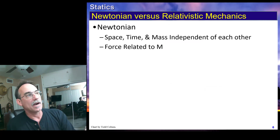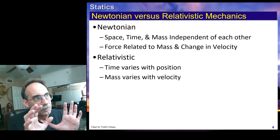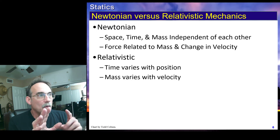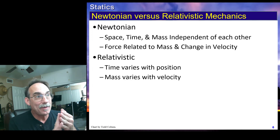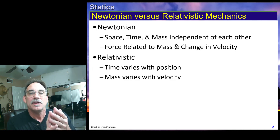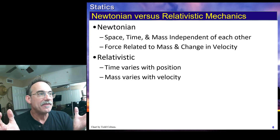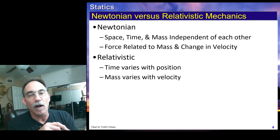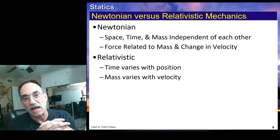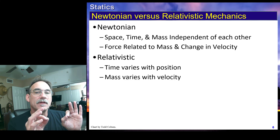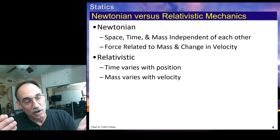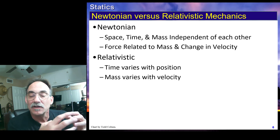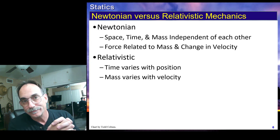We can have a Newtonian system or a relativistic system. A Newtonian system is one where space, time, and mass are independent of each other — space isn't changing with time, time is ticking by, mass is there, and forces are related to mass and change in velocity. In a relativistic system, time can vary with position and mass might vary with velocity — another word for this is magic. We're going to mostly be dealing with Newtonian systems for all our fundamental classes and all of our undergraduate work, including statics.